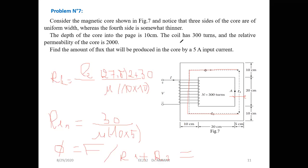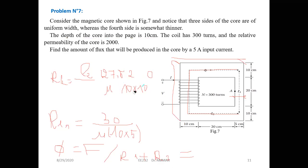To clarify the dimensions: the depth of the core into the page is 10 cm, and the thickness of the fourth side is 5 cm. The length of 27.5 cm comes from 10 plus 20 plus 5 = 35, minus 2.5 from one side and 2.5 from the other side, giving 27.5 cm for each of those path segments.